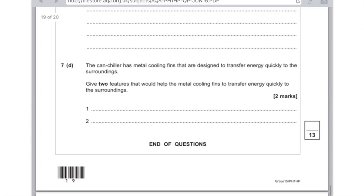Give two features that would help the metal cooling fins to transfer energy quickly to the surroundings. First, if they had a large surface area, and second, if they were black, because then they would emit infrared radiation far more easily.